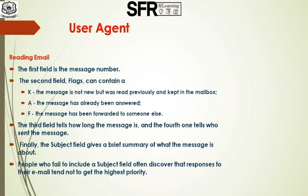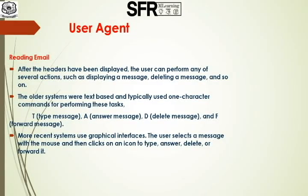People who fail to include a subject field, that particular email will not get the highest priority. After reading the email, the user can do anything — they can display messages, delete the messages, or save the messages, etc. In the older text-based system, one-character commands are used to perform these tasks. For example, T means type messages, A means answer messages, D means delete messages, and F means forward messages. But most recent systems use graphical interfaces, where these commands will be in the form of menus and you can just click them to do the task.